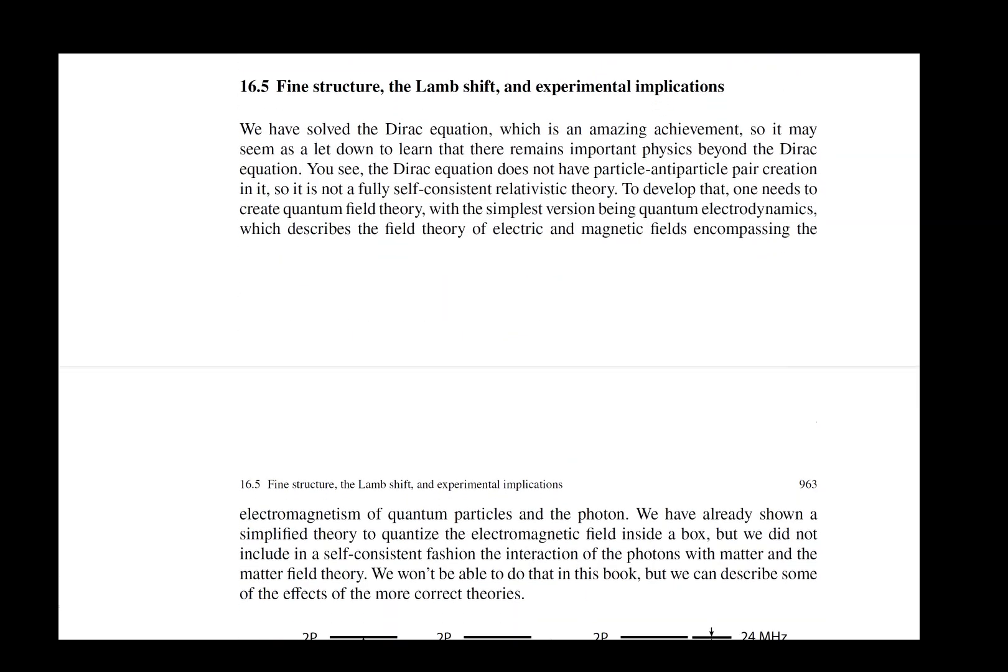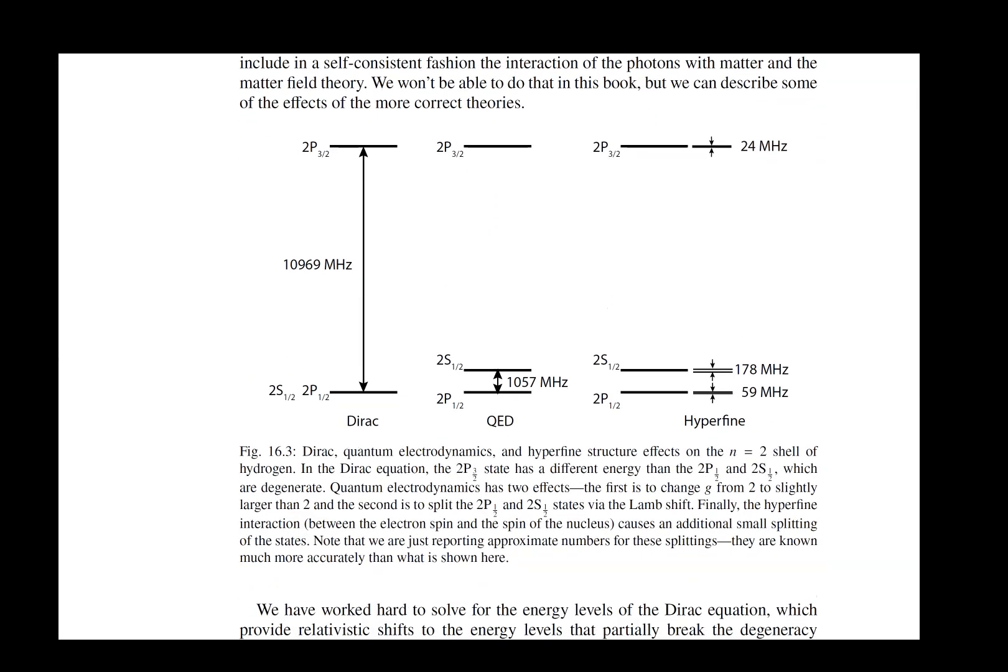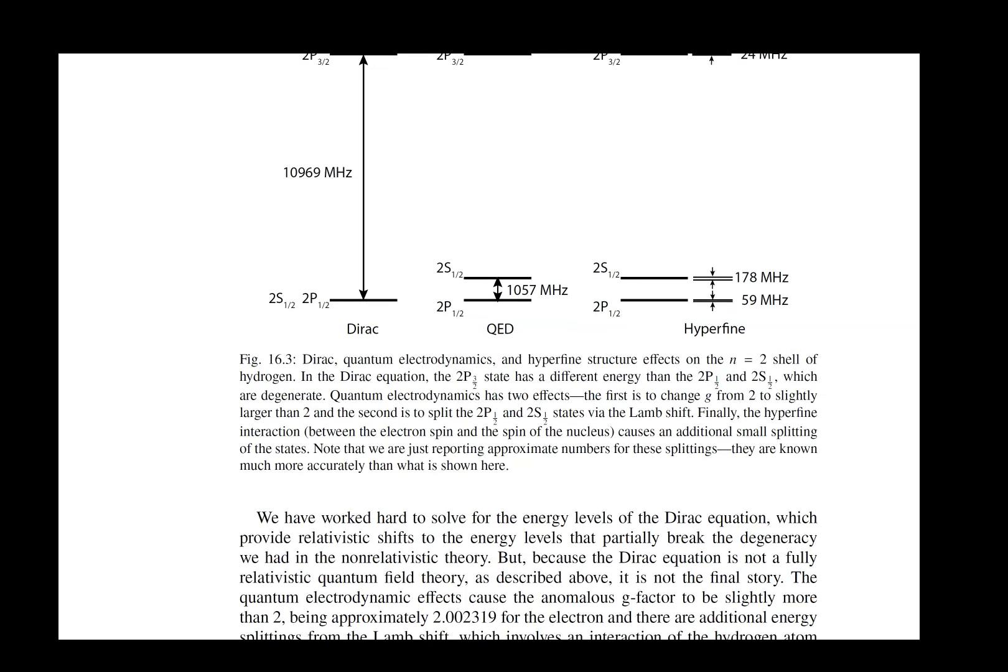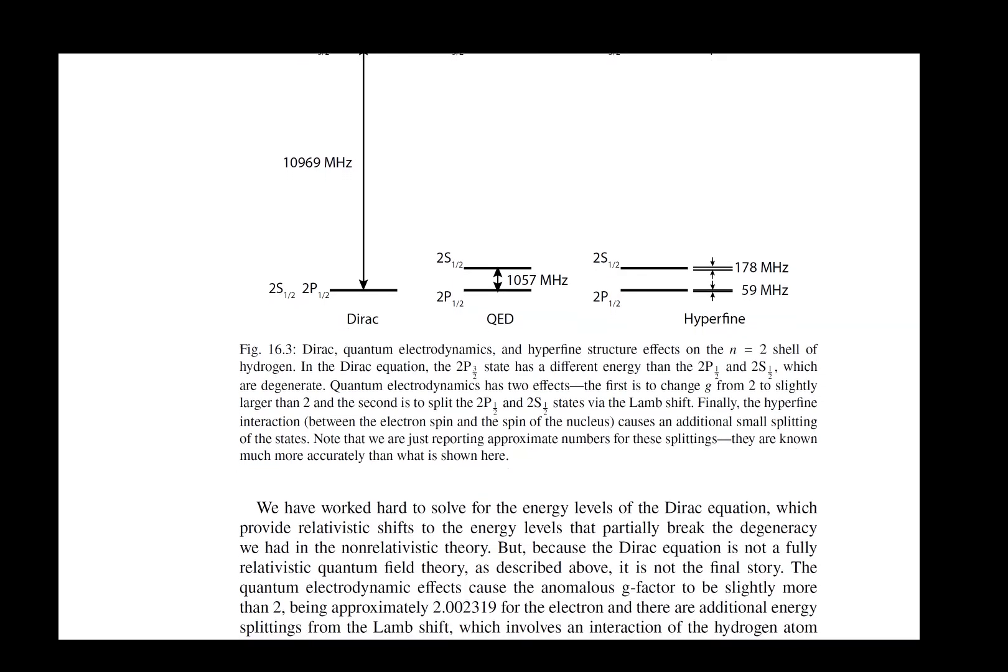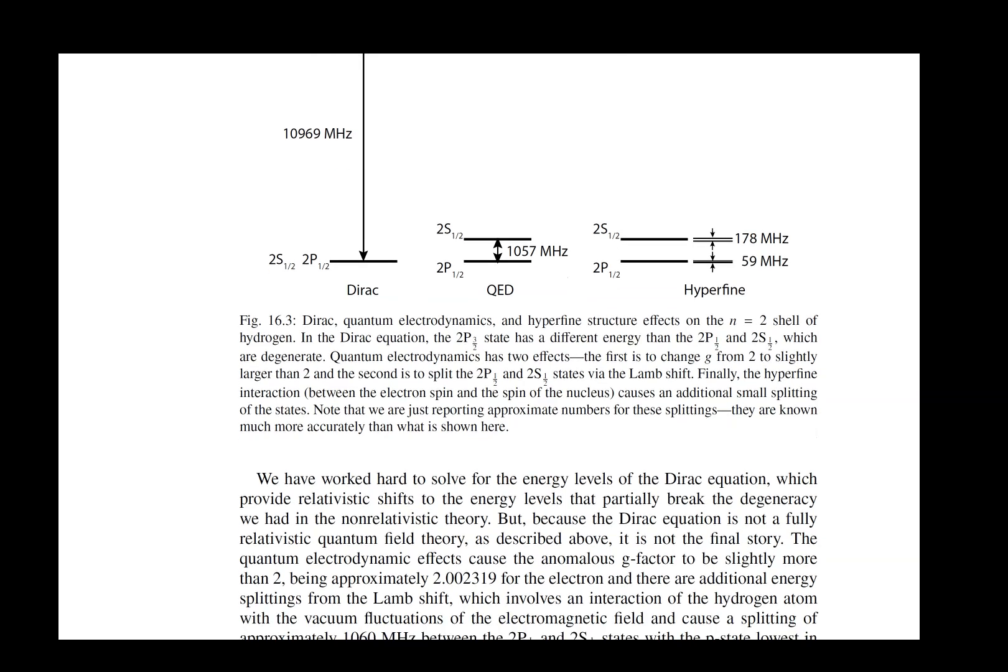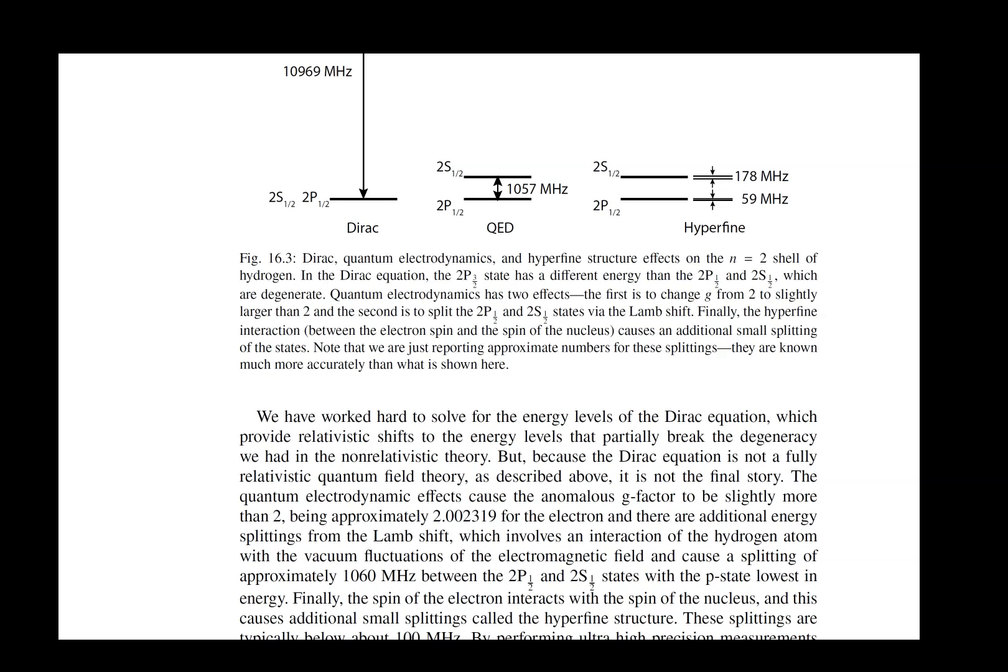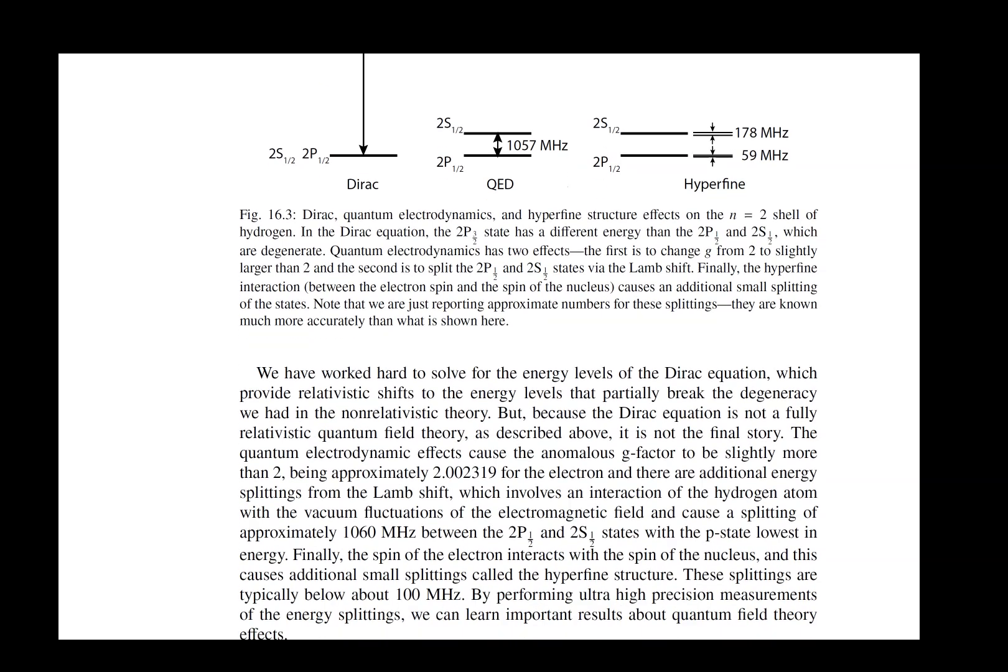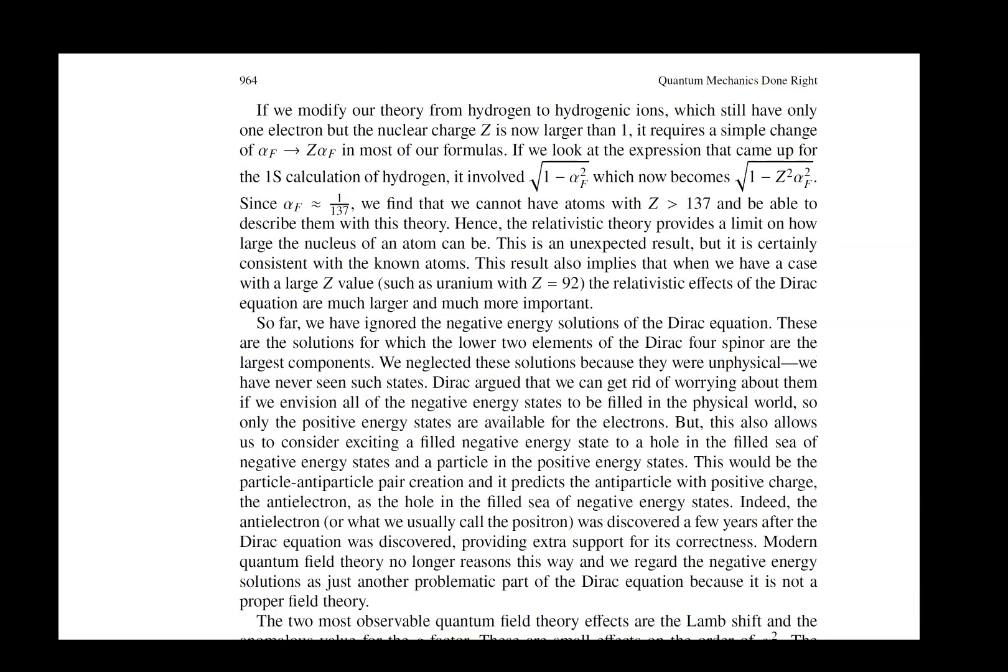Then our final section talks about fine structure, the Lamb shift, and the experimental implications. There's a lot of interesting results here that tell us about the different kinds of splittings that you will get in the spectral lines of hydrogen. Essentially, all of this is known exactly. The Lamb shift can be calculated perturbatively to quite high accuracy, but we don't have an exact calculation of the Lamb shift.